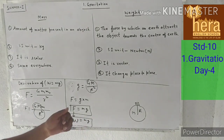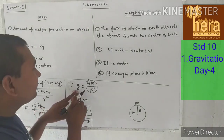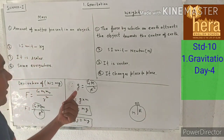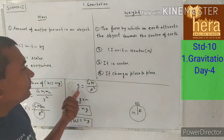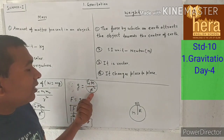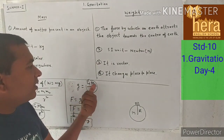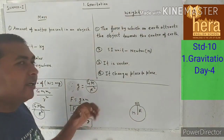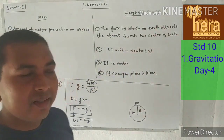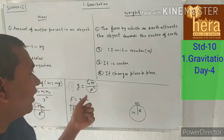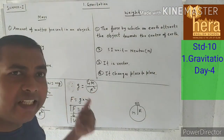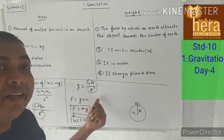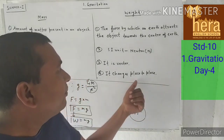The value of weight changes place to place because g depends on capital M, the mass of the planet, and capital R, the radius of the planet. Since different planets have different masses and different radii, the value of g is different for different planets. That is why weight changes place to place.